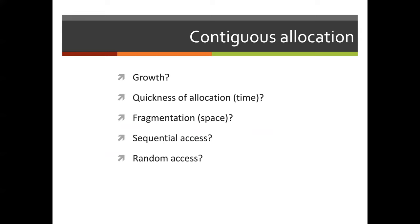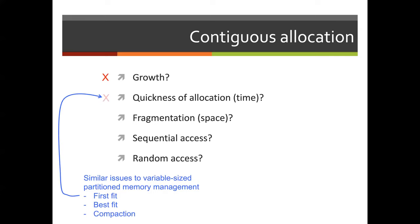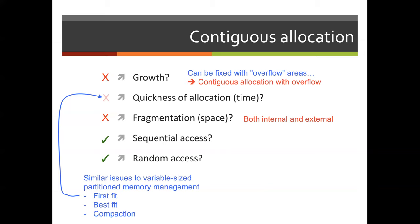With contiguous allocation, comparing it against appropriate metrics: does it support growth? No. Quickness of allocation has similar issues to variable-size partition memory management, so you can use first fit, best fit, or compaction. Fragmentation occurs both internally and externally. However, contiguous allocation does support sequential access and random access. To fix its limitations, we can have contiguous allocation with appropriate overflows included.